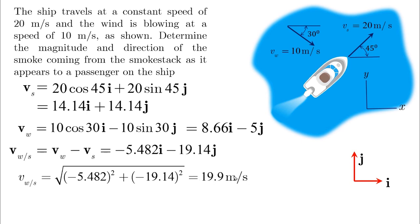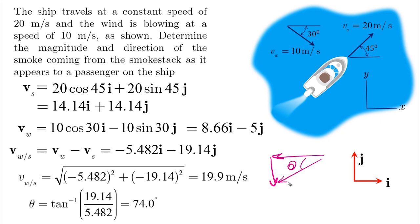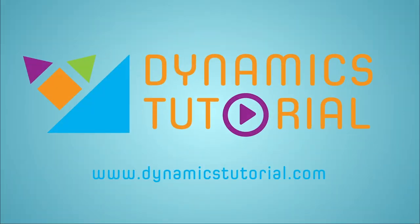To find the direction, we use the correct triangle. Negative i means i in this direction, and negative j means j in this direction. The angle theta is the tangent inverse of the y component over the x component, giving us 74 degrees — and here is the correct direction.